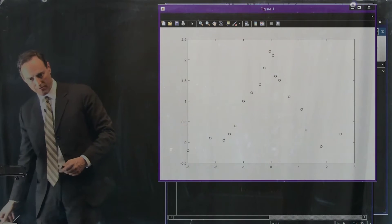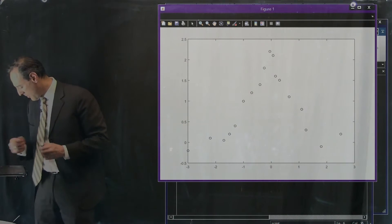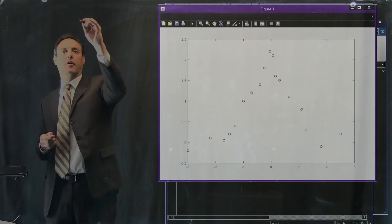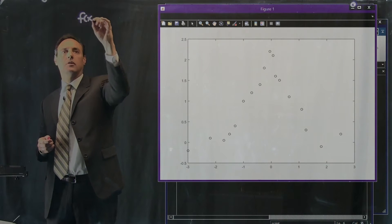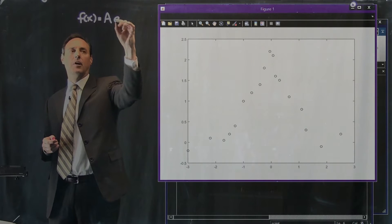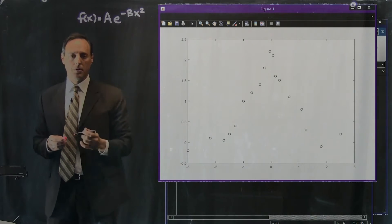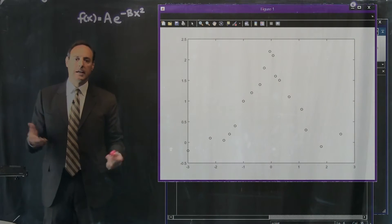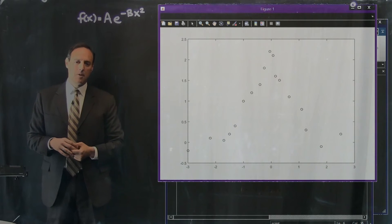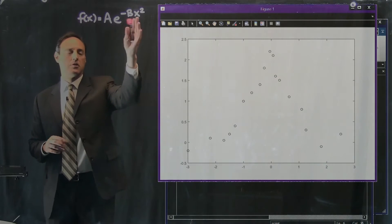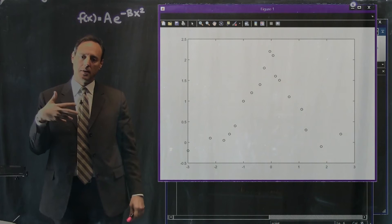And so I want to do something more sophisticated here. In particular, I would like to try to solve or fit the following function to this thing. Suppose I think that this thing might be a Gaussian.